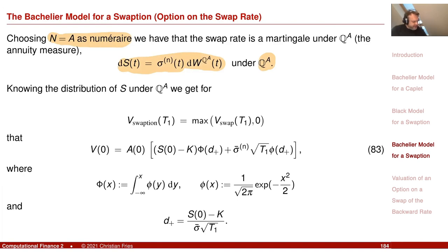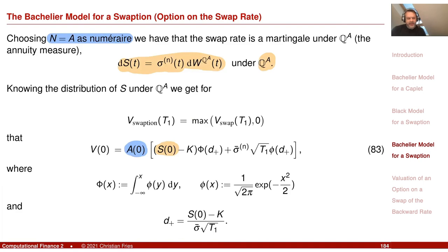We value the option — the maximum of S minus K — where the numeraire is the swap annuity. We get the Bachelier formula where the numeraire is the swap annuity and the index is the swap rate. All remaining parts are as before in the Bachelier formula.